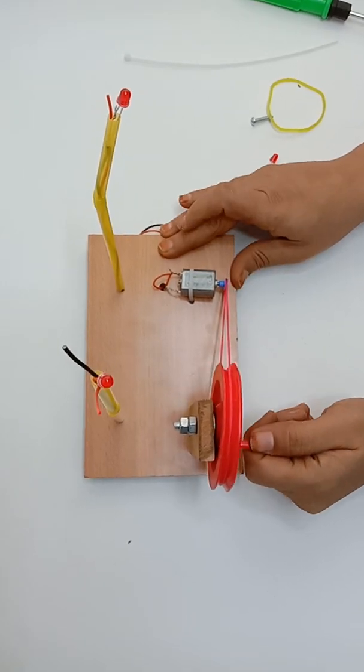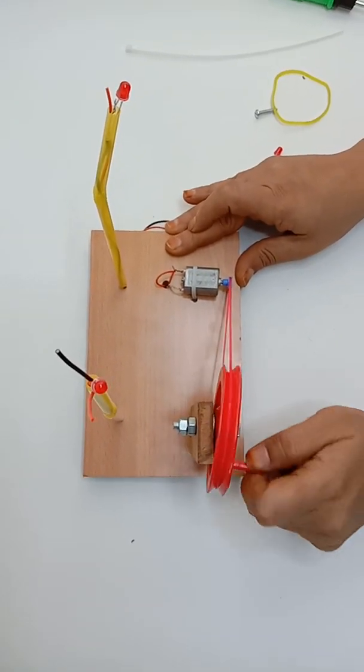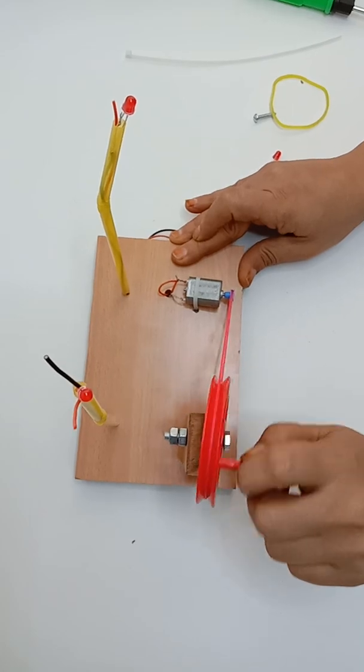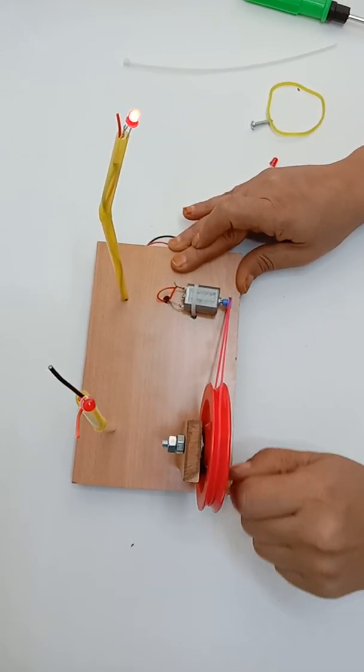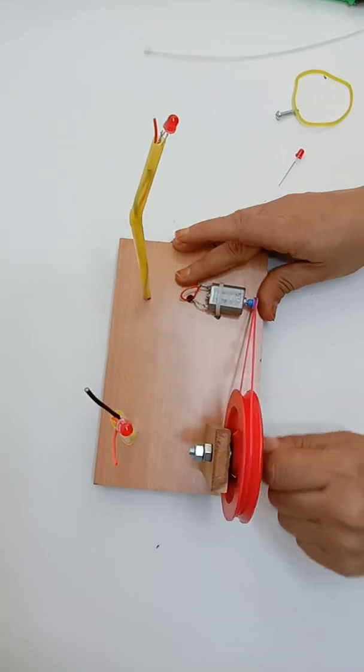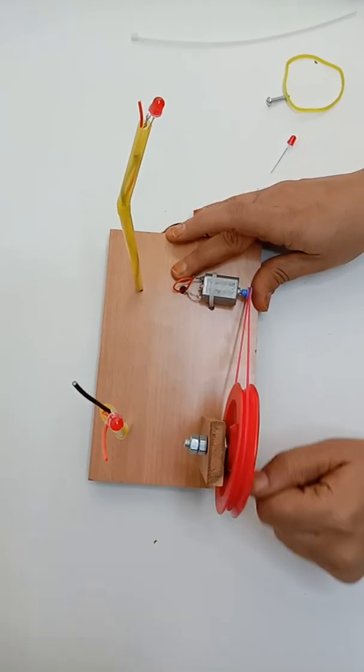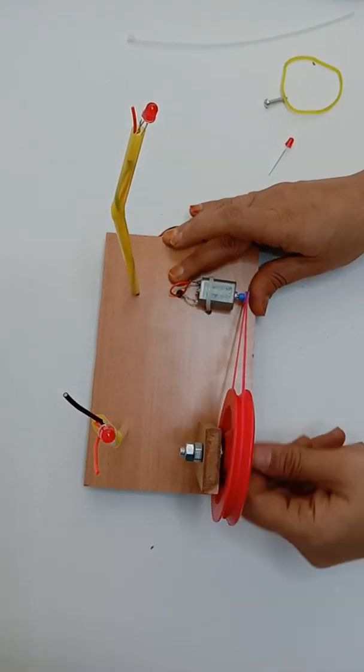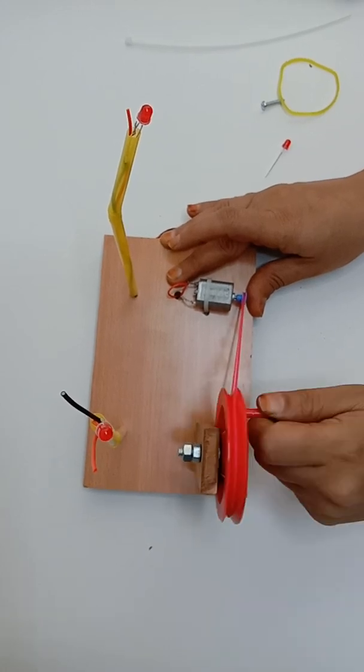That's why I reversed the connection. This dynamo can generate electricity in both directions, clockwise rotation as well as anti-clockwise rotation. Anti-clockwise, this LED is in circuit and this LED will blink. Clockwise, this LED is in circuit and this LED will blink.